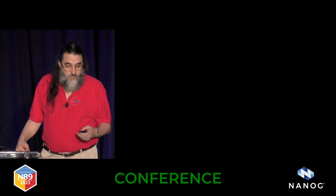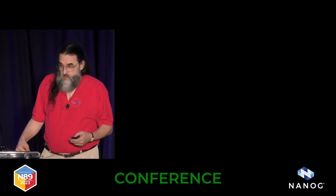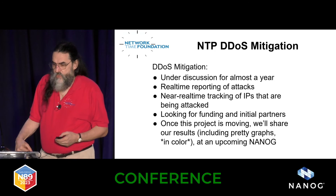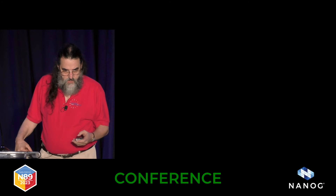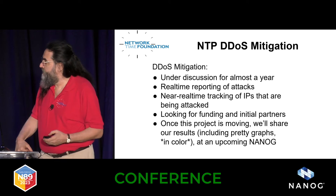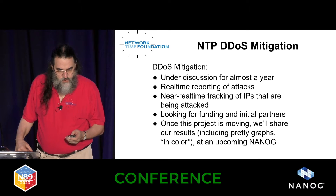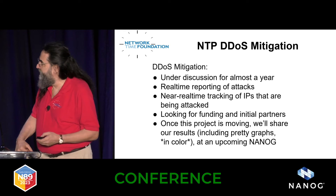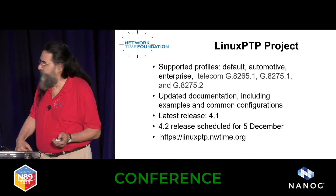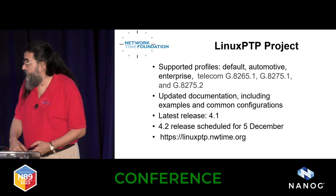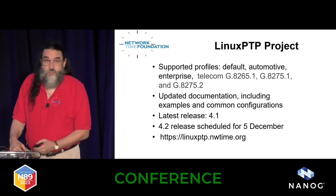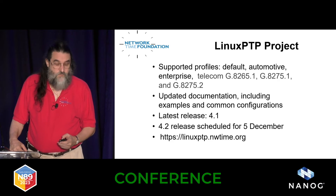This is about the Linux PTP project. Richard Cochran has decided to go to a quarterly release schedule — there was a brief slide mix-up showing DDoS mitigation instead. Richard Cochran is going to a quarterly release schedule, so his next release is the 5th of December. And just to back up a bit, NTP P18 should be coming out in a few weeks.